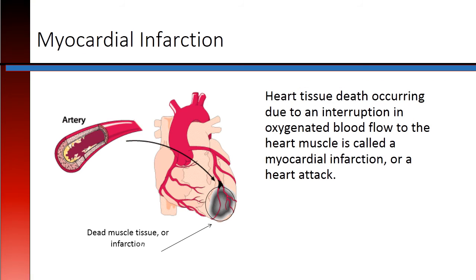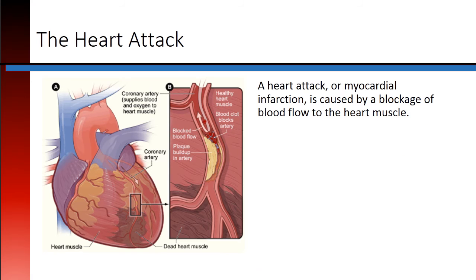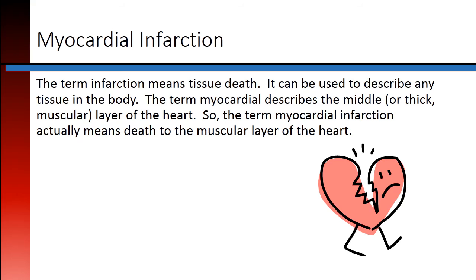Heart tissue death occurring due to an interruption in oxygenated blood flow to the heart muscle is called a myocardial infarction, or a heart attack, caused by a blockage of blood flow to the heart muscle. The term infarction means tissue death and can be used to describe any tissue in the body. The term myocardial describes the middle, or thick muscular, layer of the heart — so myocardial infarction means death to the muscular layer of the heart.